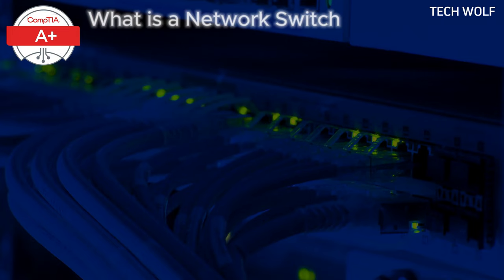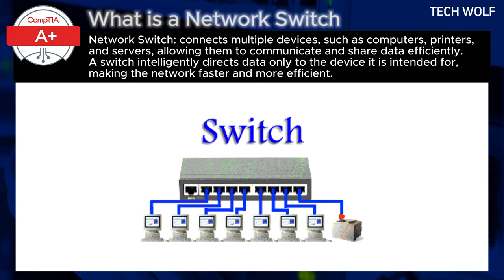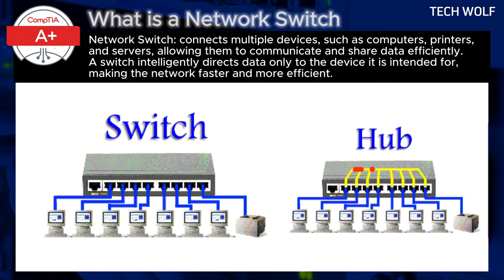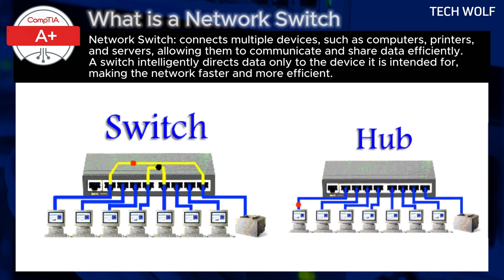What is a network switch, what it does, and what types of network switches are there? A network switch is a key device in a computer network that connects multiple devices, such as computers, printers, and servers, allowing them to communicate and share data efficiently. Unlike the hub, which sends data to all connected devices, a switch intelligently directs data only to the devices it is intended for, making the network faster and more efficient.